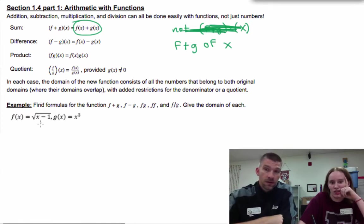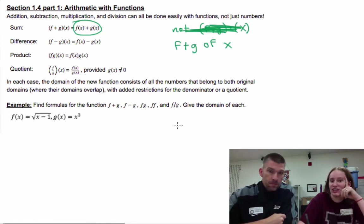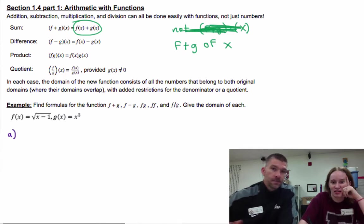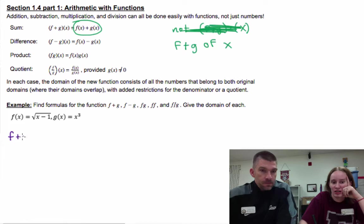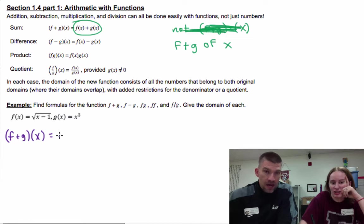Example: Find formulas for the function f plus g, f minus g, f times g, f times f, and f divided by g, and give the domain of each. So f plus g of x - this is really simple. We're going to add our functions together: square root of x minus one plus x cubed. That's it. Please don't try and smash these together. This is not a fruit salad where you just throw whatever you want in there.